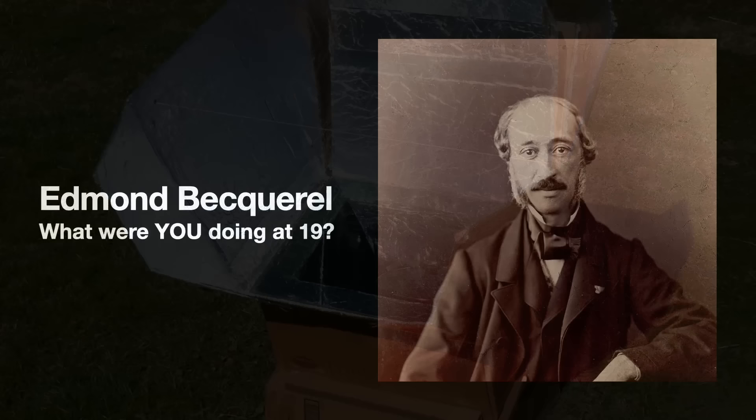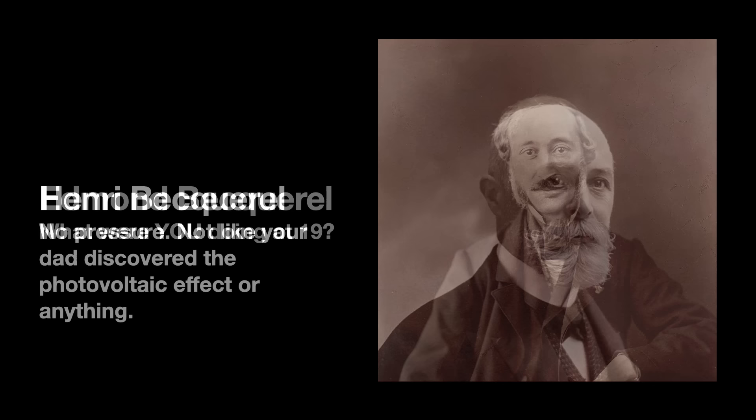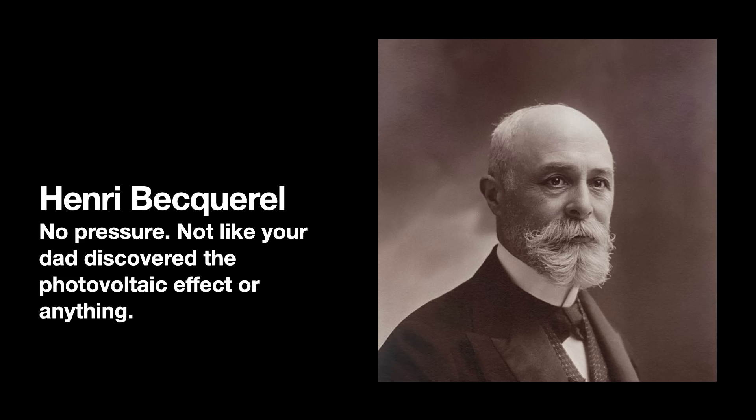In 1839, the French physicist Edmond Becquerel, at the tender age of 19, discovered the photovoltaic effect. If you expose certain materials to light, then they generated voltage and current. Edmond's son, Henri, would discover evidence of radioactivity and shared the 1903 Nobel Prize in physics with the Curies. What a legit family of physicists.